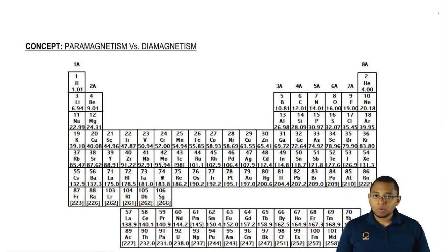Paramagnetism means that our element, or sometimes our ion, has unpaired electrons.